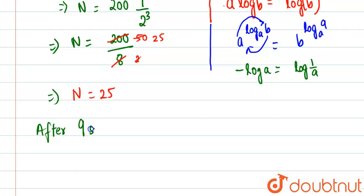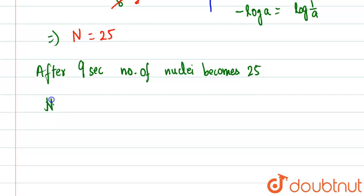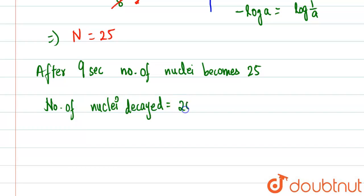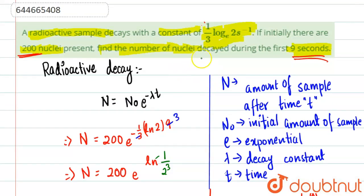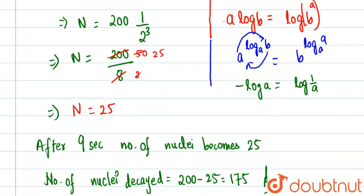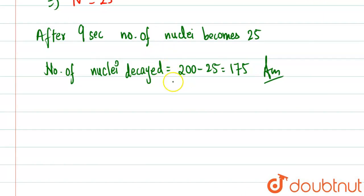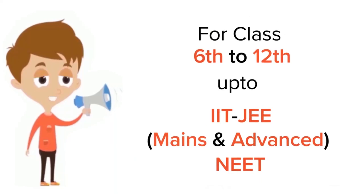After 9 seconds, the number of remaining nuclei is 25. The number of nuclei that decayed equals N₀ − N = 200 − 25 = 175. So 175 nuclei decayed in the first 9 seconds. That is our final answer.